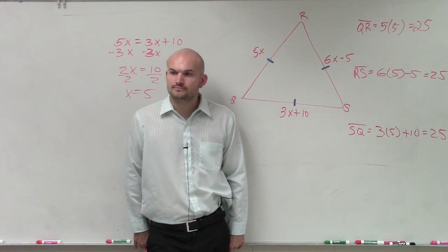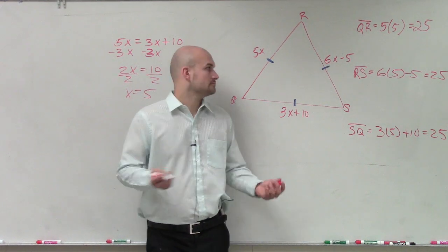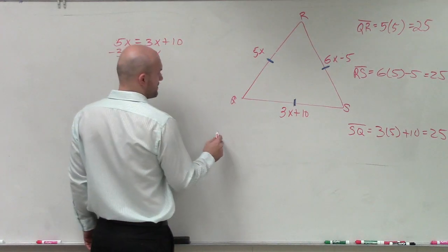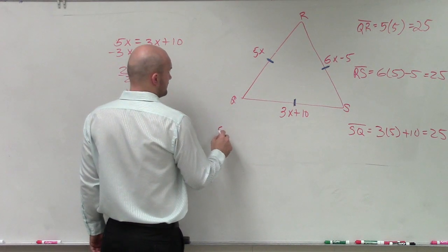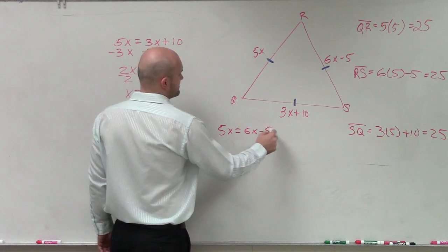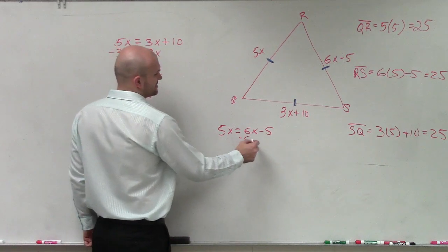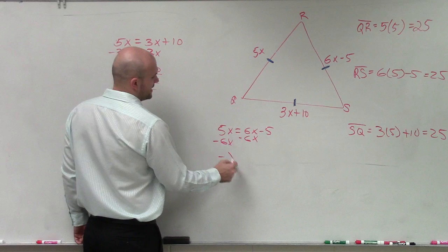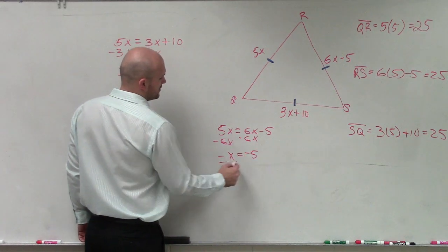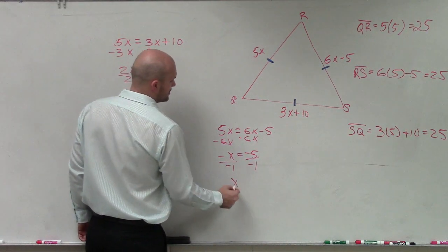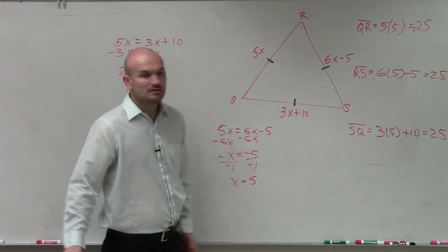Does it matter, like, if you've done 5x equals 6x minus 5? Yep. So let's do that. 5x equals 6x minus 5. Minus 6x minus 6x. Negative x equals negative 5. Divide by negative 1. Divide by negative 1. x equals 5. So it doesn't matter.